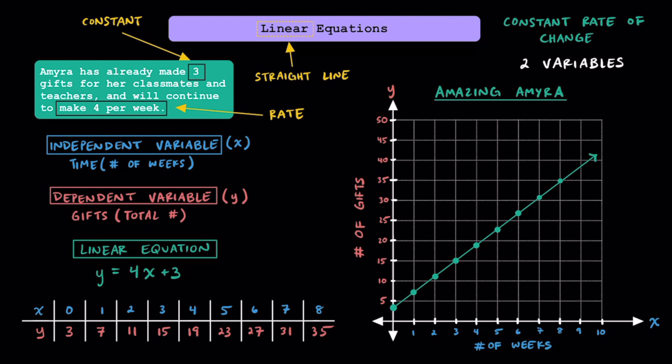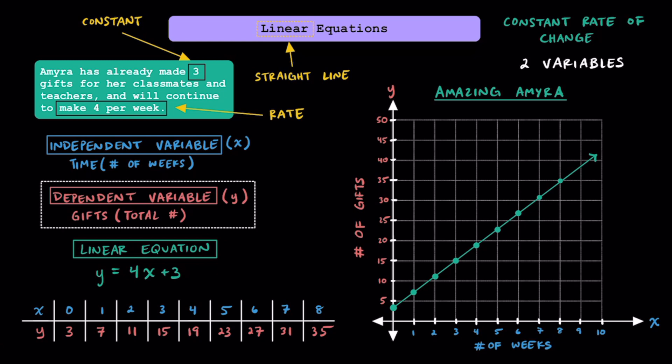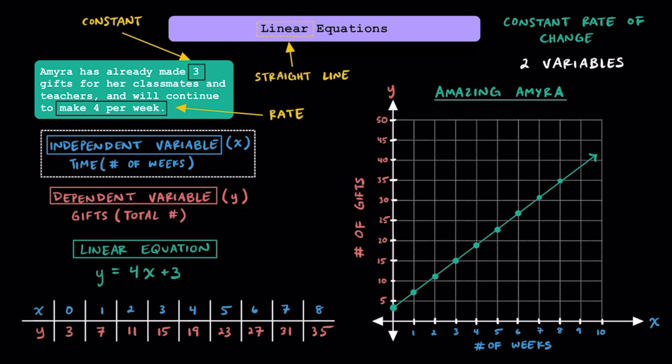In this situation, there are two types of variables: the independent variable and the dependent variable. The independent variable, which we refer to as x and graph along the x-axis, for this problem is going to be measured in weeks. If zero weeks go by, Amira can't make any more gifts, but if more weeks go by, she can make more gifts.